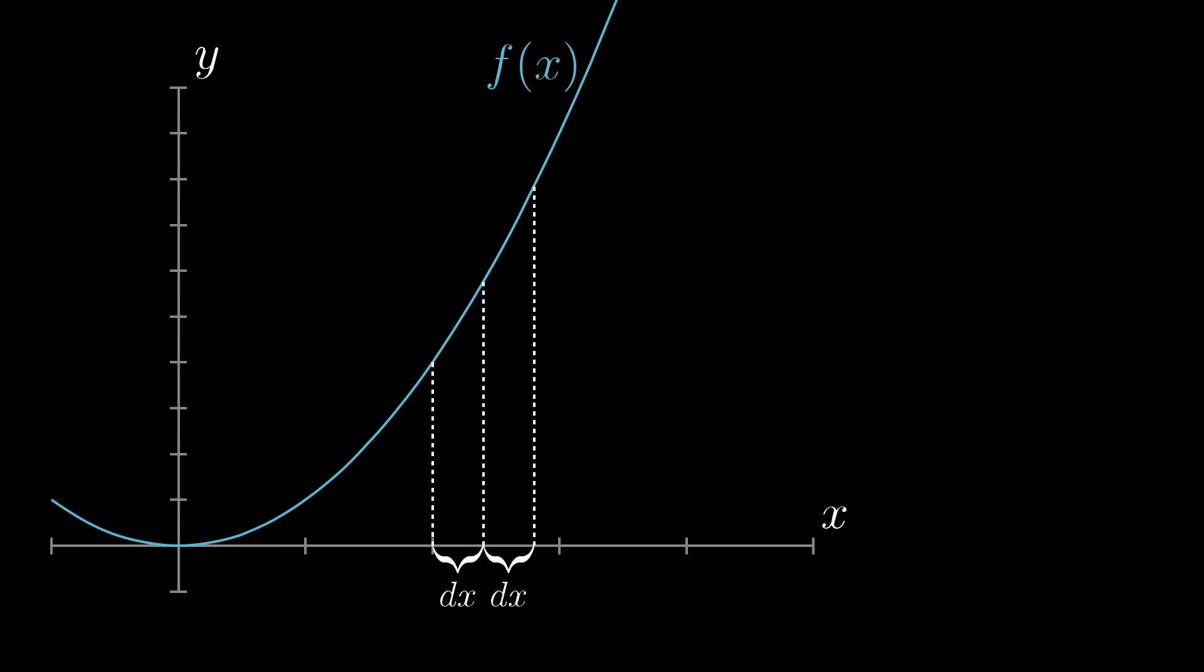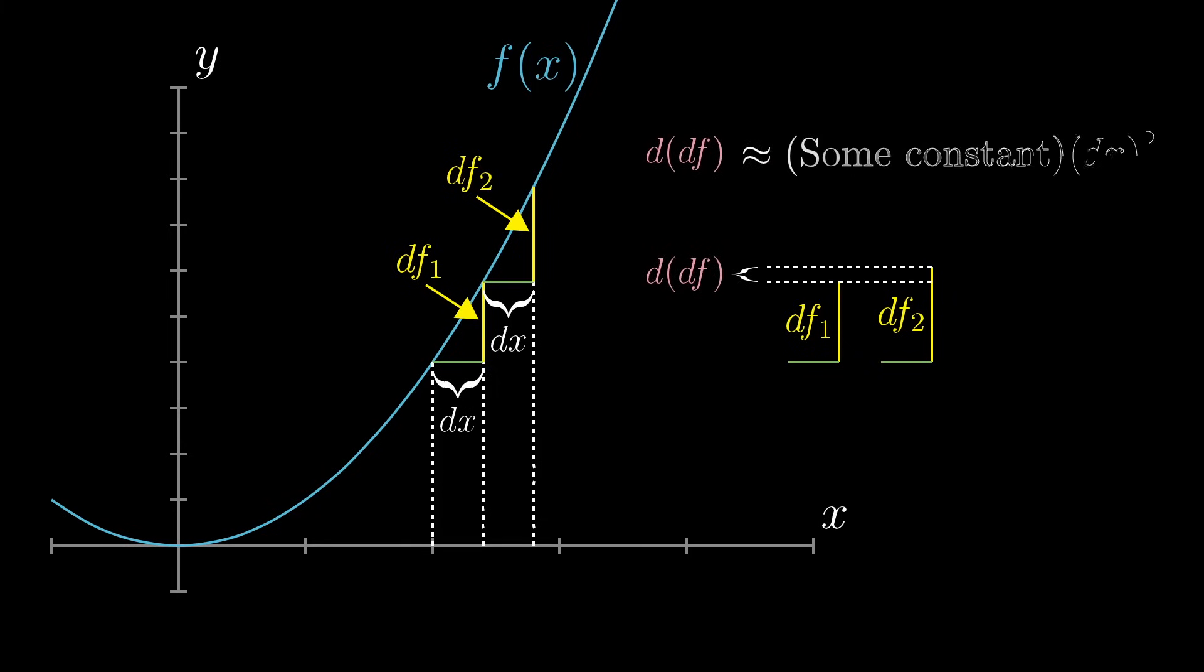The first step causes some change to the function, which I'll call df1, and the second step causes some similar but possibly slightly different change, which I'll call df2. The difference between these changes, the change in how the function changes, is what we'll call ddf. You should think of this as really small, typically proportional to the size of dx squared. So if for example you substituted in 0.01 for dx, you would expect this ddf to be about proportional to 0.0001. And the second derivative is the size of this change to the change, divided by the size of dx squared.